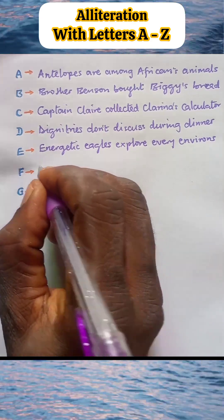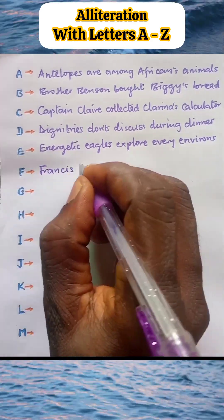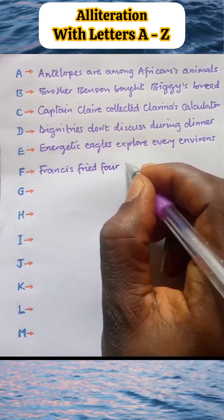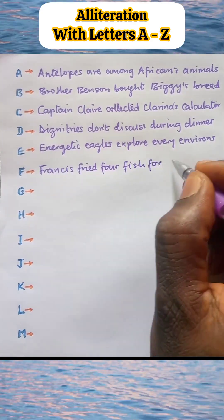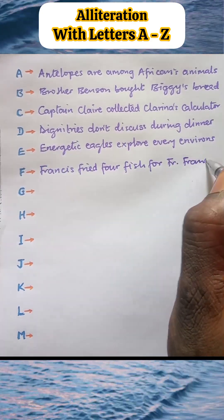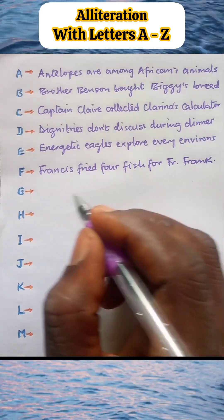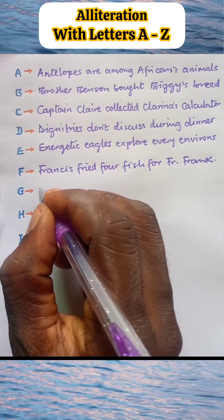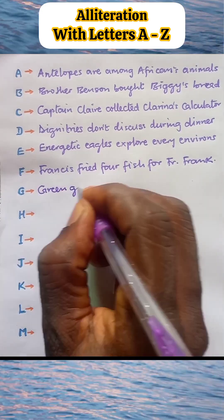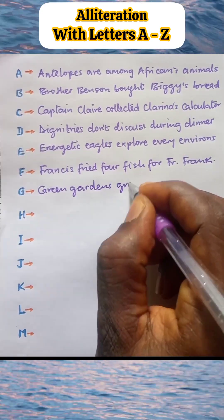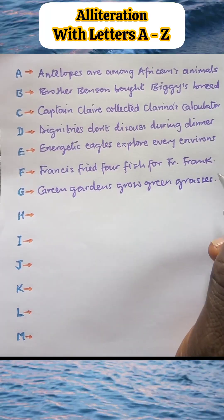Alliteration F: Francis fried four fish for Father Frank. Alliteration G: Green gardens grow green grasses.